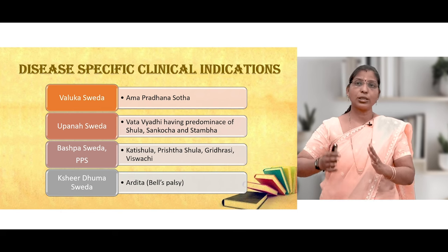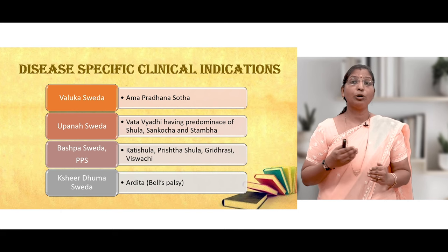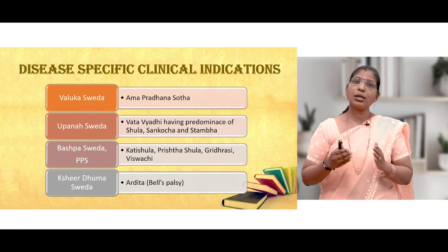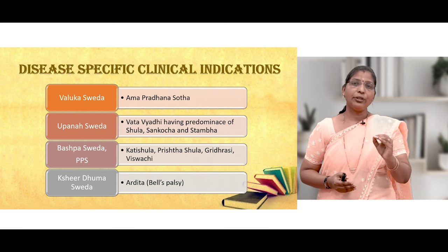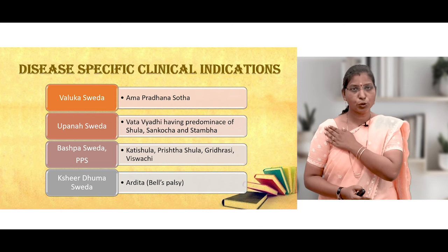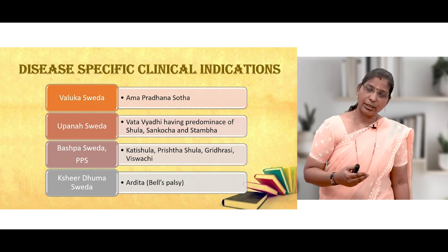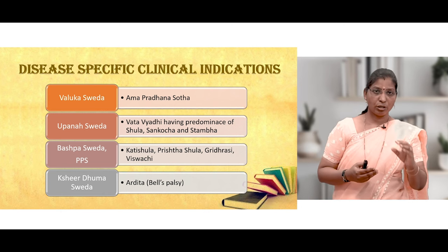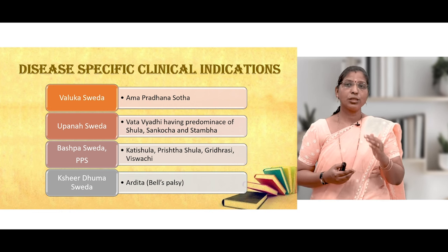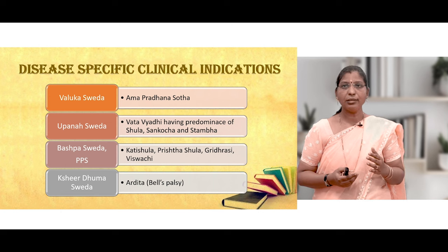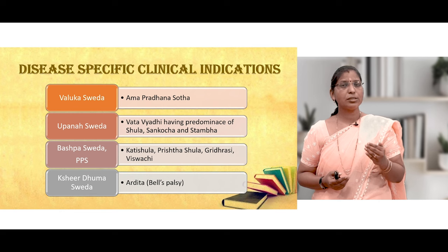Valuka Sveda is the most Ruksha type of Svedana. Upanaha Sveda is used whenever there is Vata with predominance of Sula, Sankosha, and Stambha at a joint — mostly in frozen shoulder, tennis elbow, ligament injury to the knee joint, or arthritis at a joint.